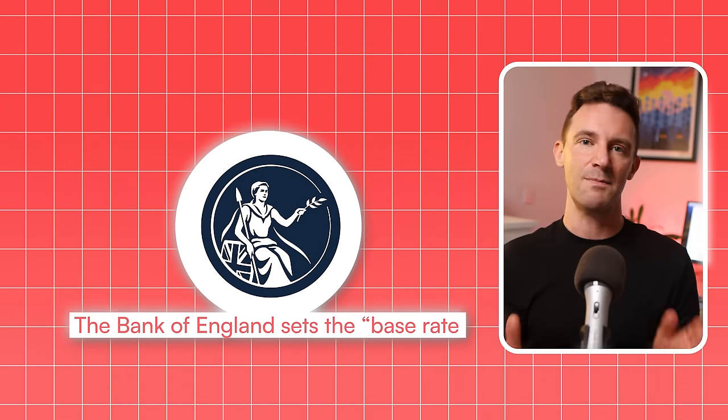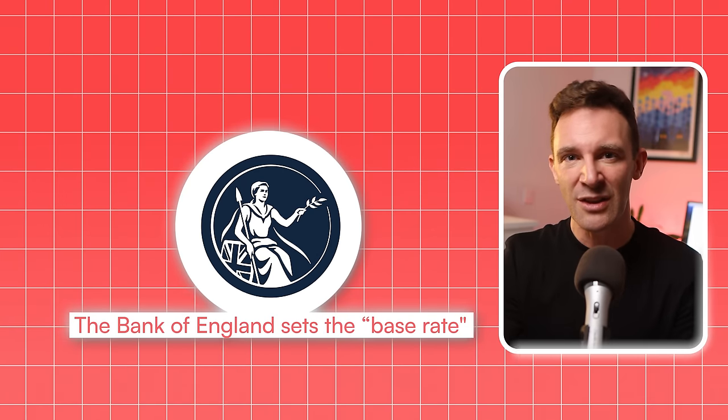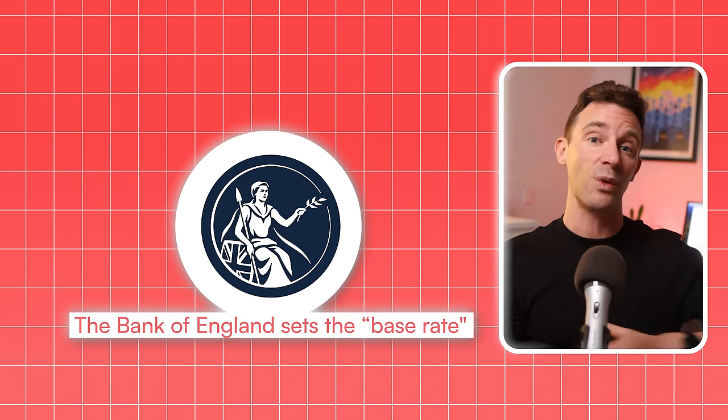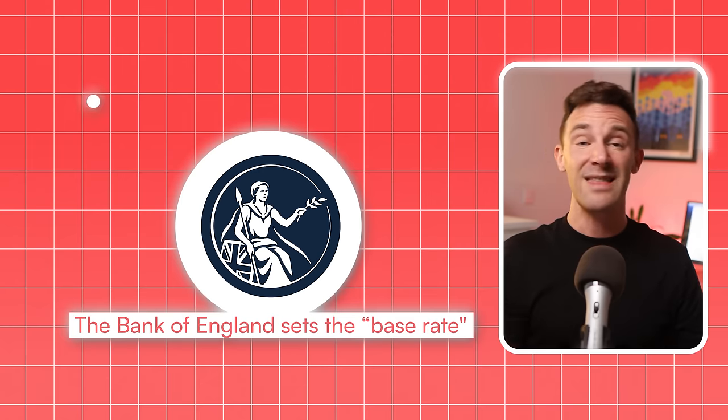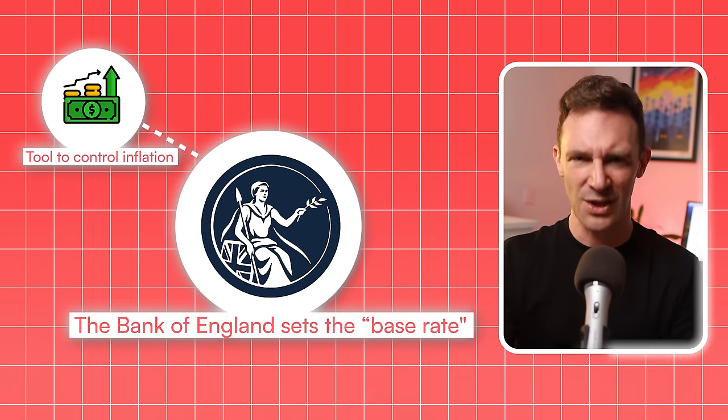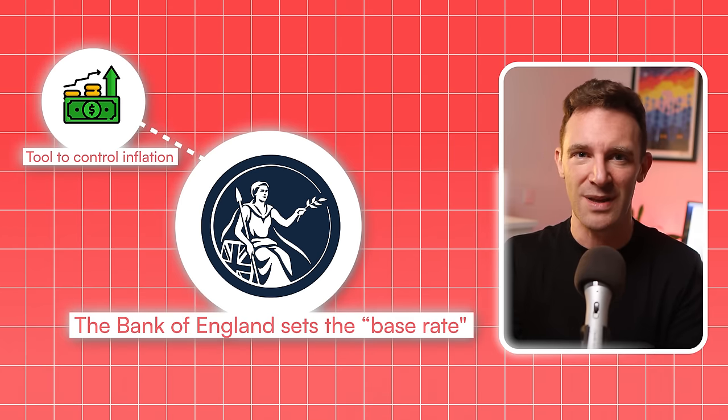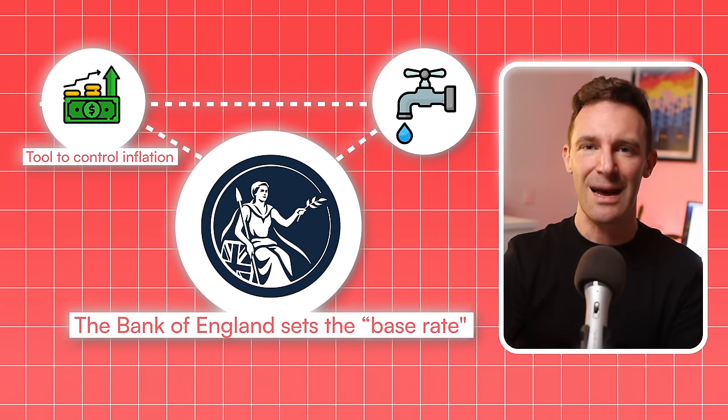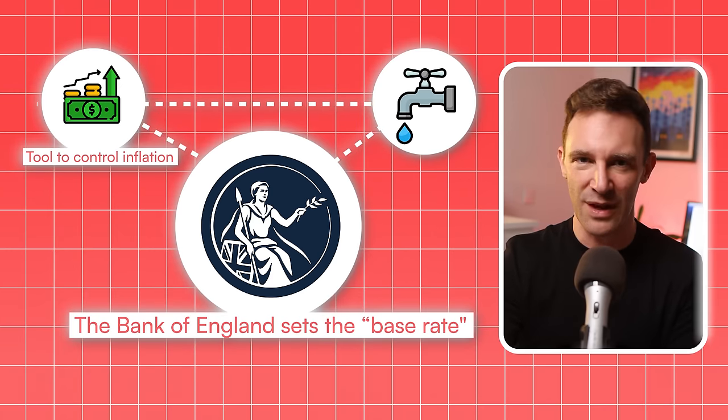So what's actually going on with interest rates? Let me explain exactly how this works. Because to understand what's happening now, we need to go back to basics. The Bank of England sets the base rate, which is basically the fundamental interest rate that influences all other interest rates in the economy. It's their big tool to control inflation, where they're aiming for around 2% per year.